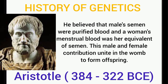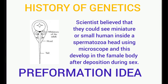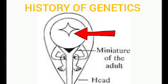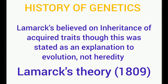This next era talks about the millennia between the lives of Aristotle and Mendel. Two millennia exist between the ideas of Aristotle on heredity and Mendel's ideas, from around 322 BC to 1866 AD. During this period, the pre-formation idea emerged — scientists believed they could see a miniature human inside the head of a spermatozoon using a microscope, which would then develop inside the female body.